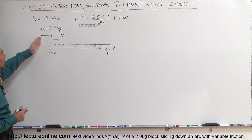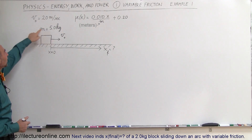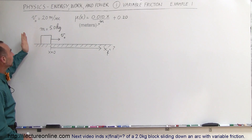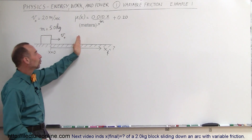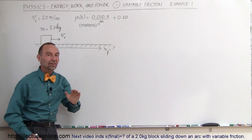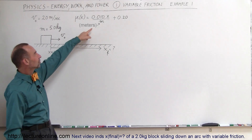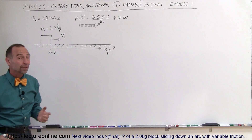The object has a mass of 5 kilograms and an initial velocity of 20 meters per second. So how far will this block slide over the horizontal surface when the friction is a variable friction?